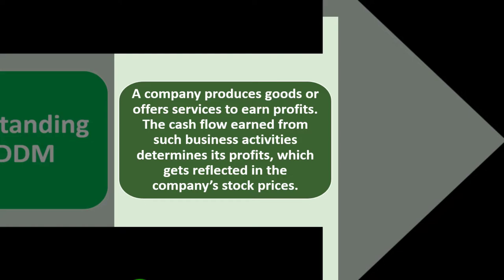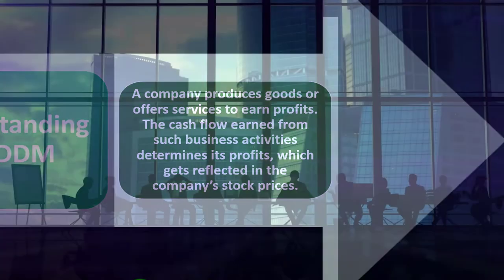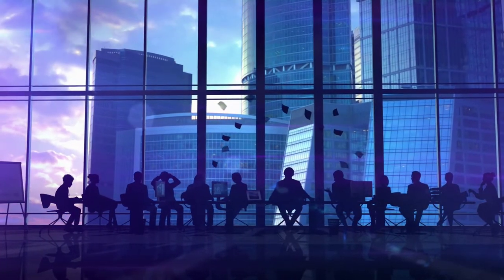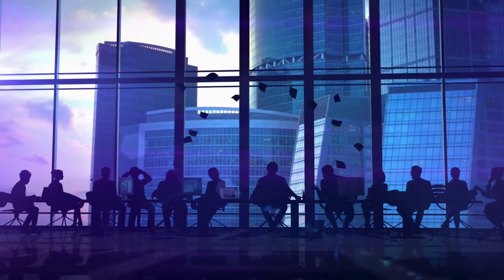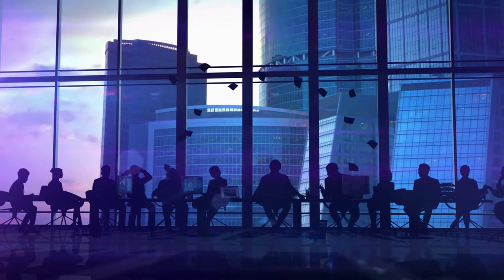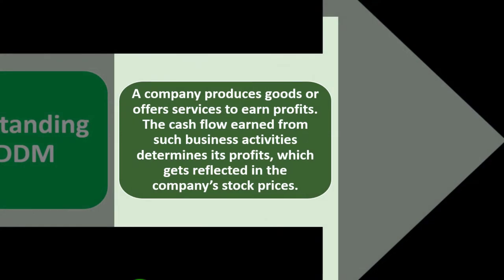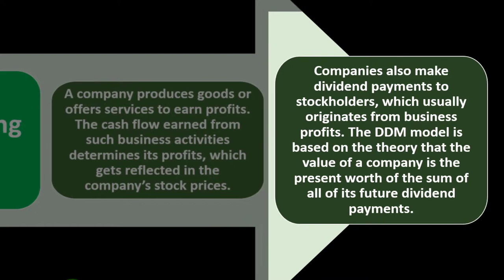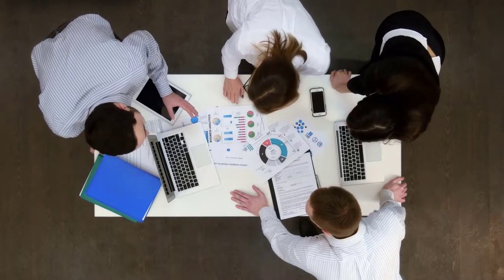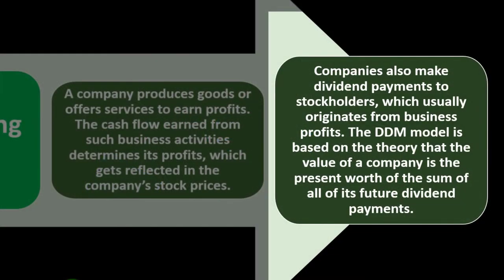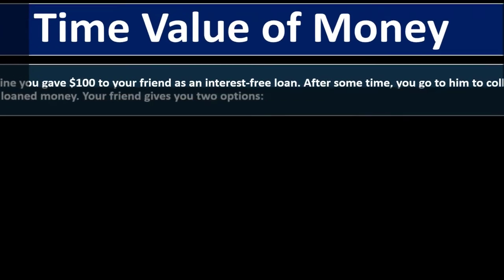To understand the DDM: a company produces goods or offers services to earn profits — that's what companies do and why we invest in them. They take our capital and buy assets to generate revenue, hopefully generating a return greater than what we could get by putting cash elsewhere. That cash flow determines profits, which are reflected in the stock price. Companies also make dividend payments to stockholders, which usually originate from business profits.